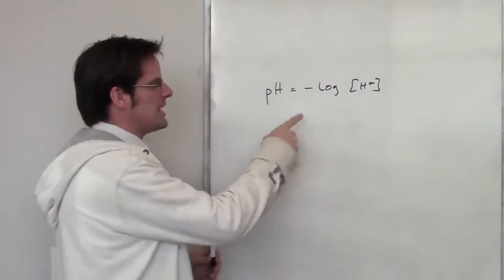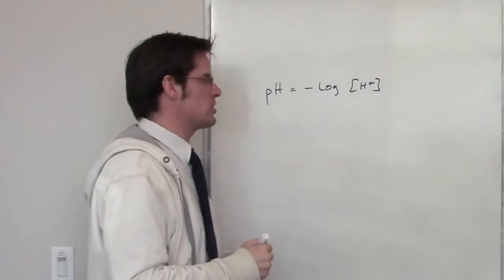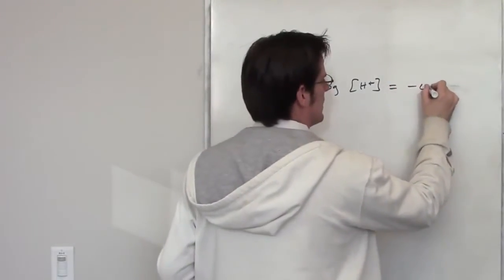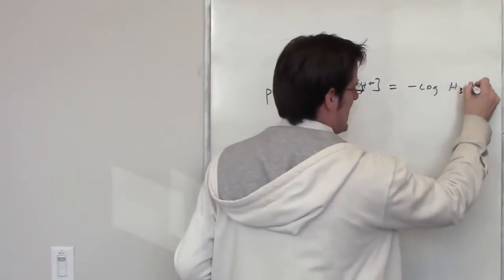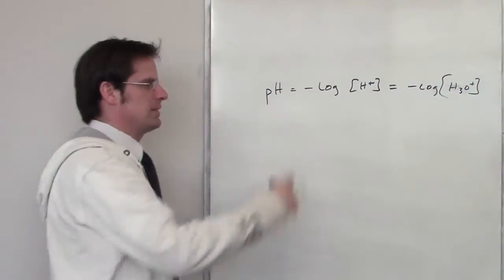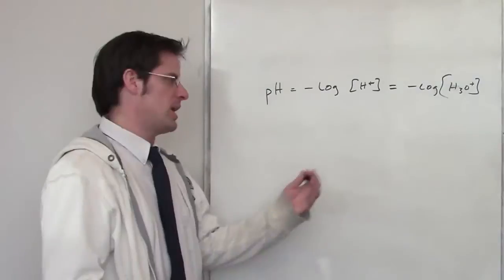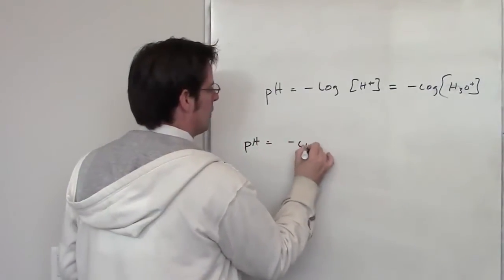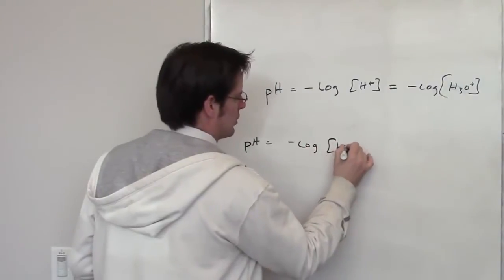By definition, pH is equal to the negative log of the concentration of H+. As I've already mentioned elsewhere, H+ is interchangeable with H3O+, at least if you're in an aqueous solution. So H+ is sort of a lazy person's way of writing down H3O+, but nonetheless, that's sort of what we've got. I've got pH being set equal to negative log of H+ concentration.